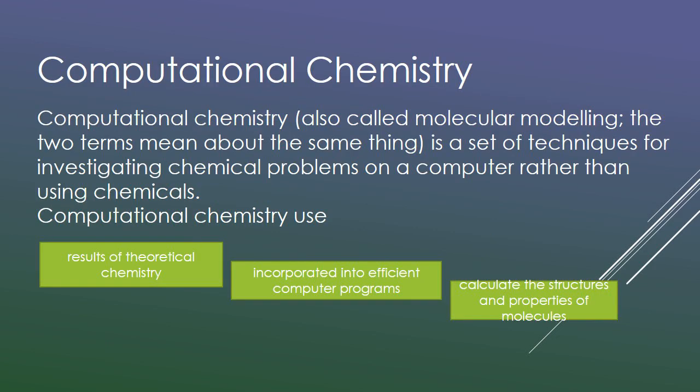Computational chemistry, also called molecular modeling, is a set of techniques for investigating chemical problems on a computer rather than using chemicals. Computational chemistry uses the results of theoretical chemistry, incorporated into efficient computer programs, which calculate the structures and properties of molecules.